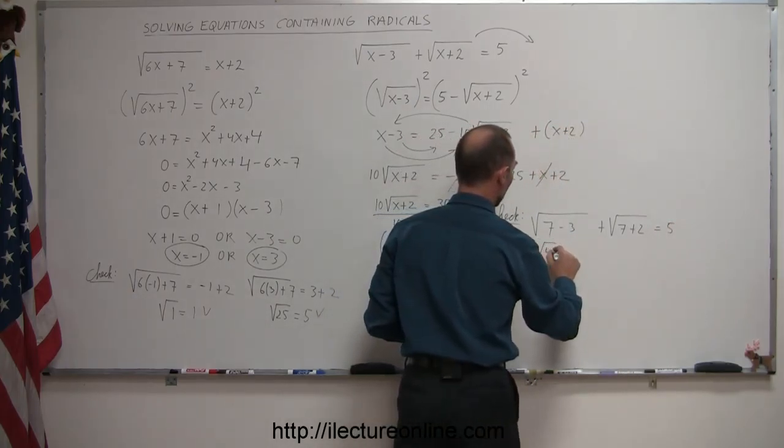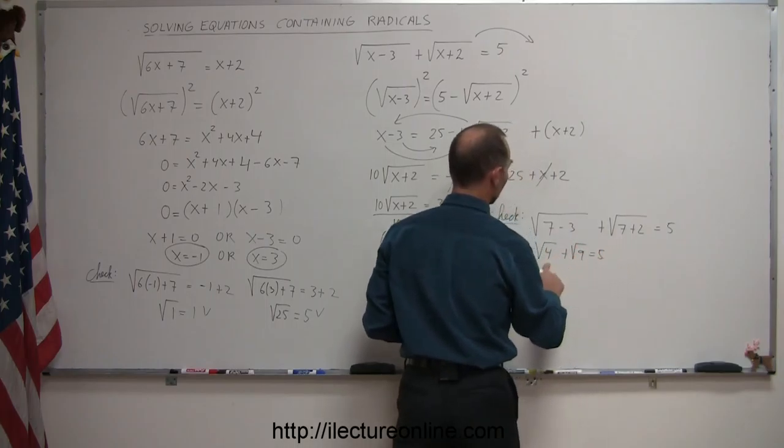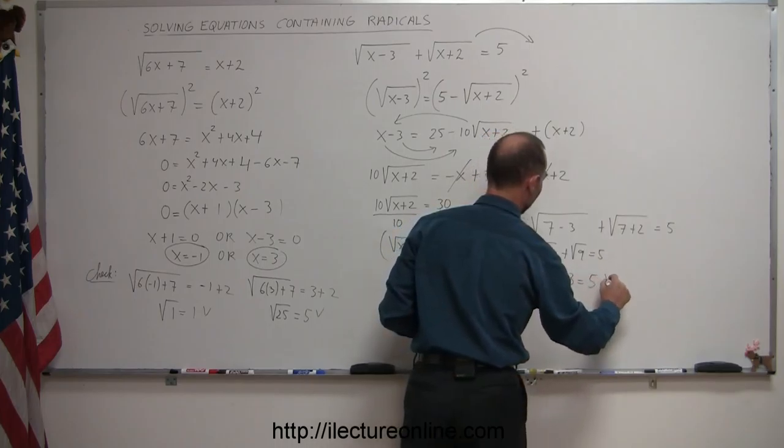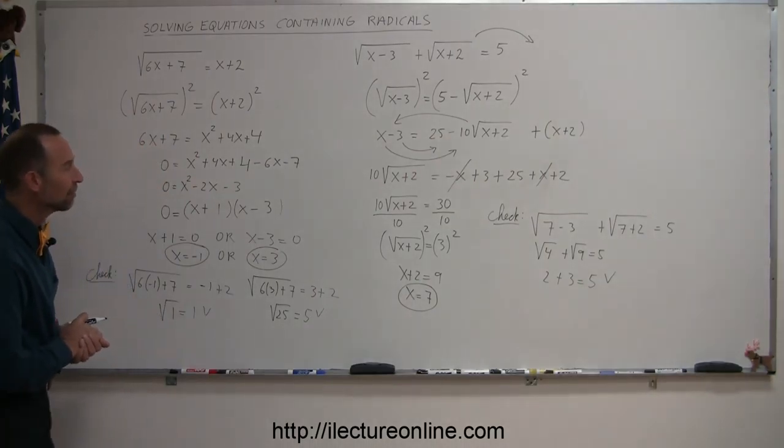So this is the square root of 4 plus the square root of 9 equals 5. Of course, the square root of 4 is 2. The square root of 9 is 3. And that, of course, equals 5. So that looks like it's a good solution. And we found it.